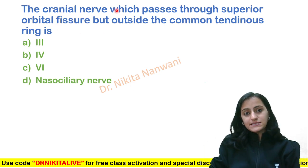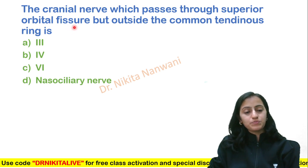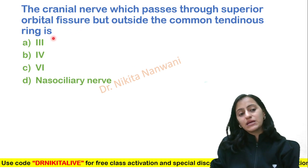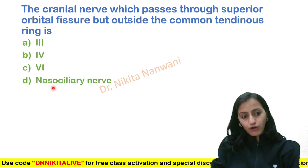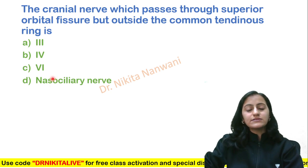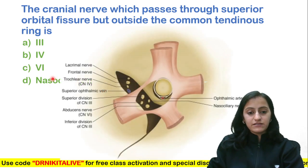The question is: which cranial nerve passes through the superior orbital fissure but outside the common tendinous ring — which of the following? Let us have a look at the superior orbital fissure.